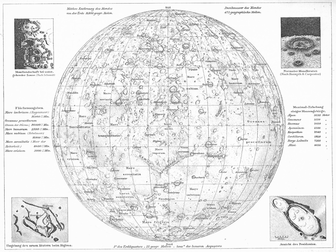All features on Phobos are named after scientists involved with the discovery, dynamics, or properties of the Martian satellites, or people and places from Jonathan Swift's Gulliver's Travels.